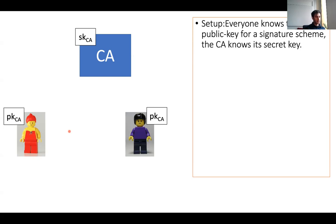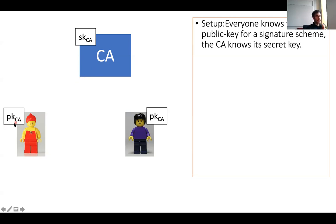The setup of a certificate authority is a bit different from a KDC. In the context of CAs, the certificate authority has a public key and secret key pair for some signature scheme — called PKCA and SKCA. All users in the system are assumed to know the public key of the certificate authority. We will later discuss how users get hold of this public key. The certificate authority knows its own secret key.